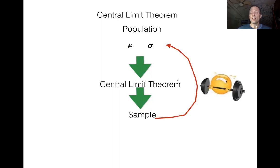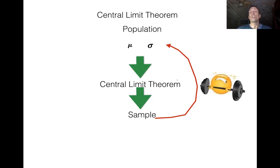So what's going to happen is in Chapter 6 we're going to be going forward with the green arrows — we're going to learn how to analyze the probability of a sample average given what we know about population information. And in Chapter 7 we're going to go in reverse. We're going to draw a sample out of a population and use what we're seeing in the sample to make generalizations about what's happening in the population.